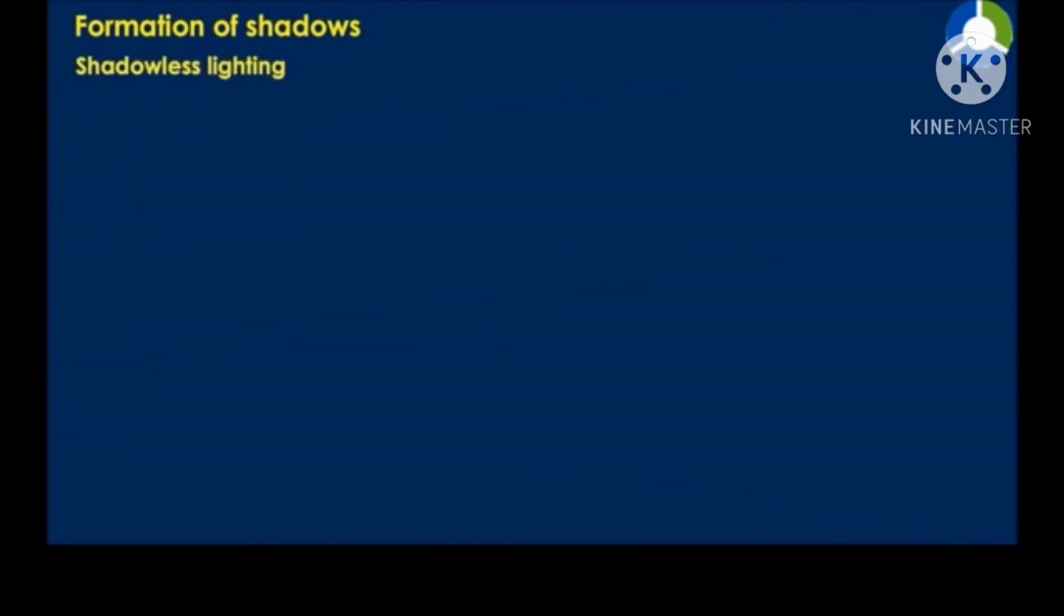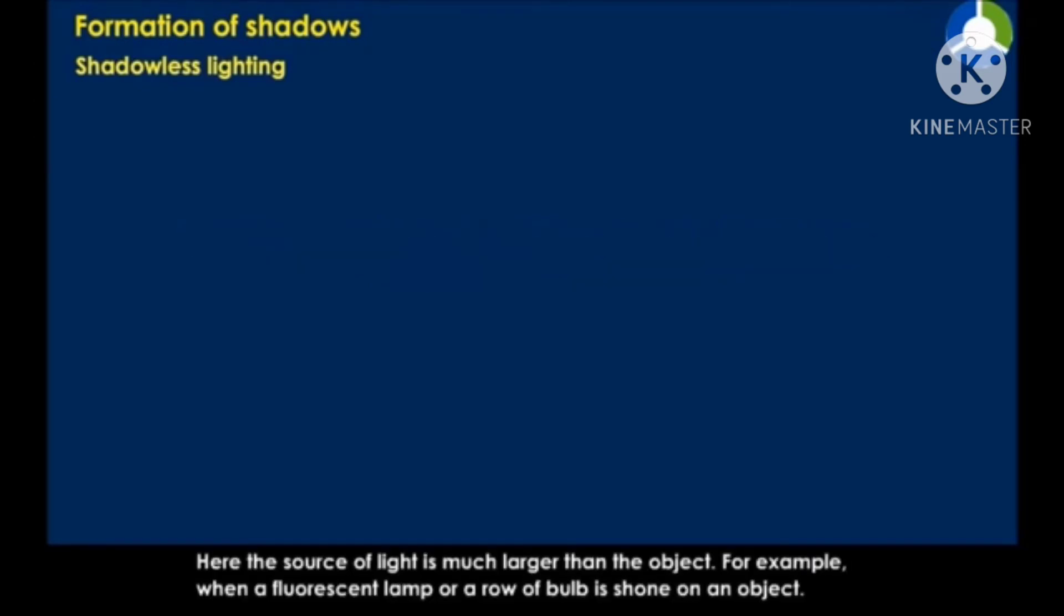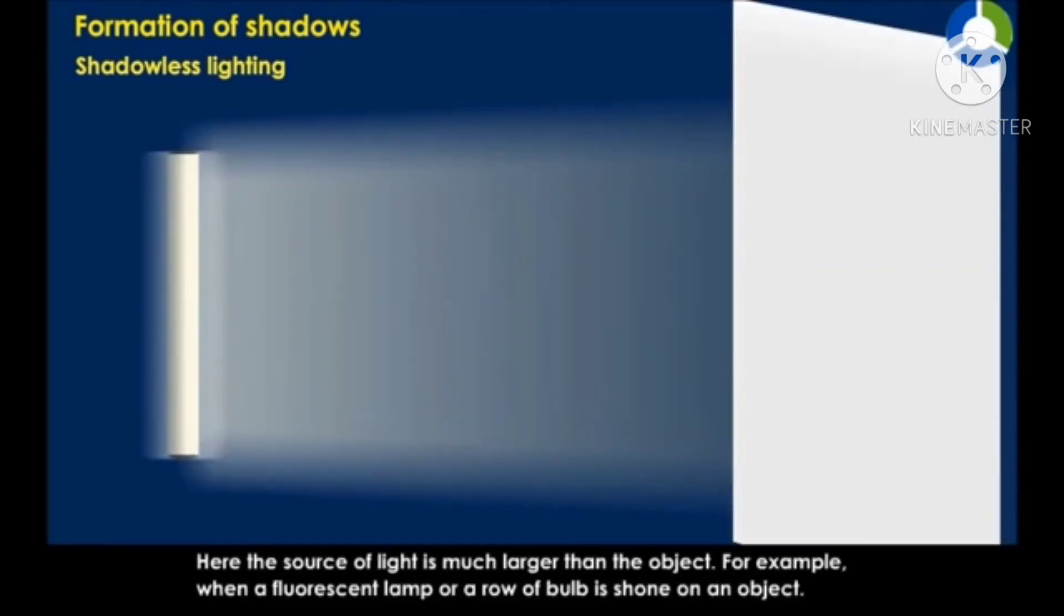Shadowless lighting. The fact that light travels in straight lines and produces shadow is used to produce shadowless lighting. Here, the source of light is much larger than the object.